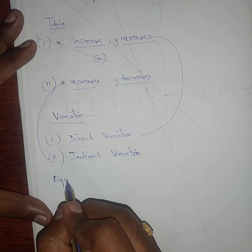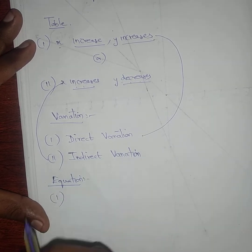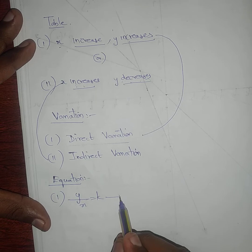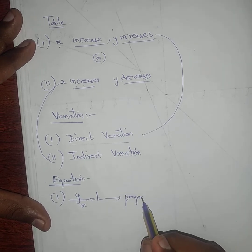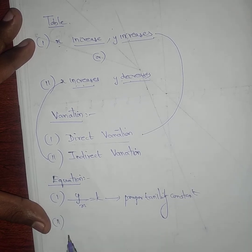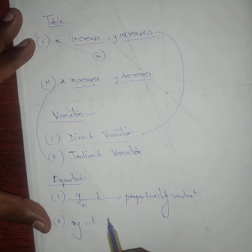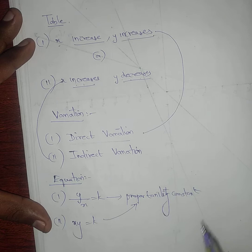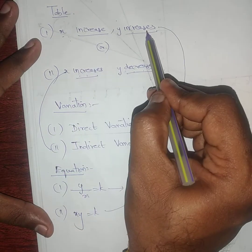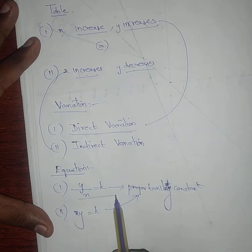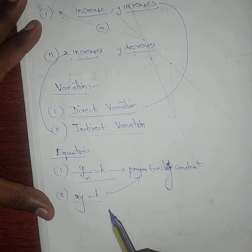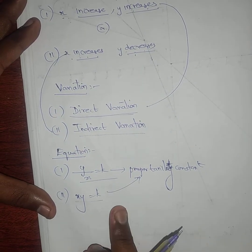Next, the equations. For direct variation — x increases y increases — the equation is y by x equals k, where k is called the proportionality constant. For indirect variation — x increases y decreases — the equation is x times y equals k, where k is also the proportionality constant.